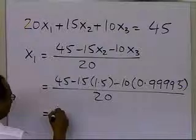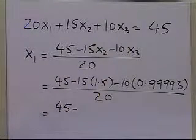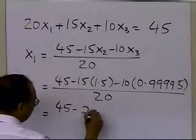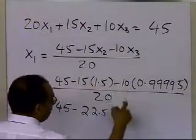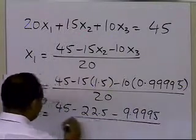Because your calculator is taking more significant digits than what we are allowed to use here, which is 5 with chopping. So from here, this calculation I get 22.5, and from here I get 9.9995 divided by 20.